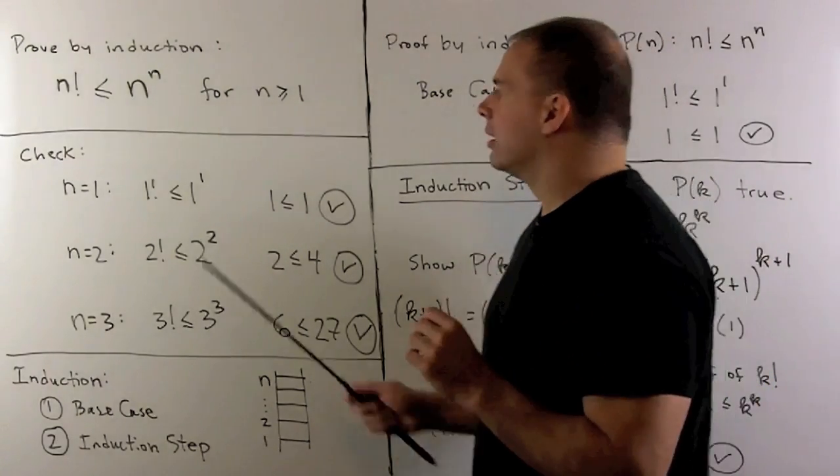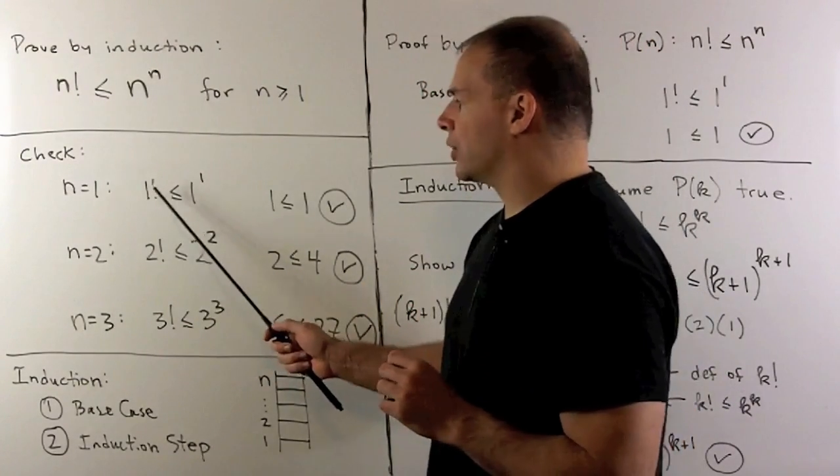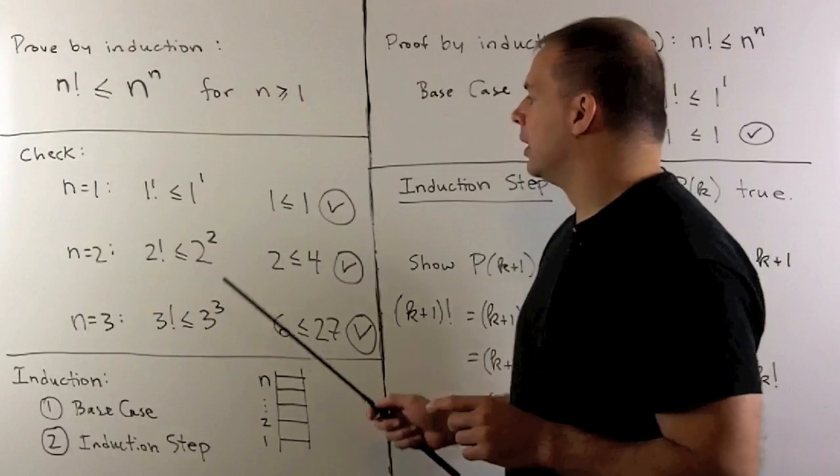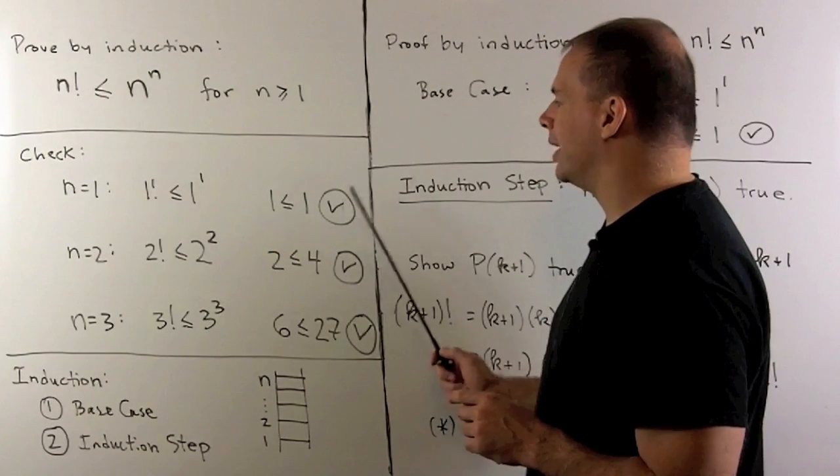So if we check the first few n for our statement, for n equal to 1, that's just going to be 1. Then I have 1 to the 1, which is also 1, so 1 is less than or equal to 1, and that checks out.